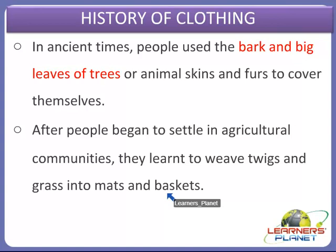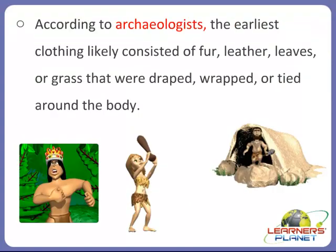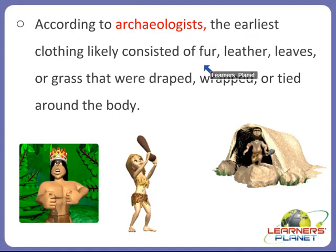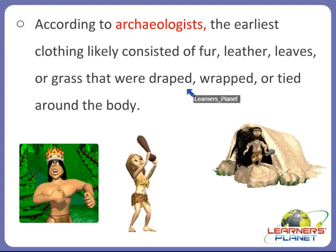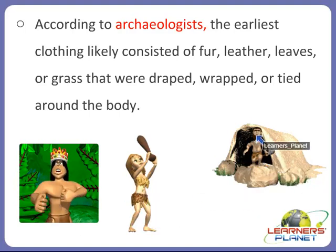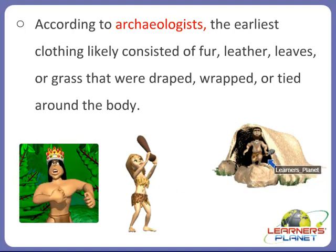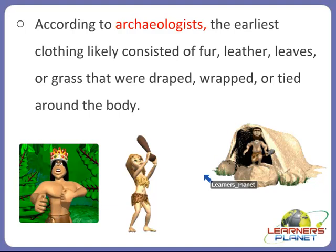These fabrics made out of cotton or flax were used by the people after they began to settle in agricultural communities. You will be amazed to know that, according to archaeologists, the earliest clothing likely consisted of fur, leather, leaves, or grass that were draped, wrapped, or tied around the body. As you can see in the pictures, this is a picture of people in ancient times — they were wearing animal skin because they did not have any type of cloth. So the earliest clothing probably comprised of grass or leaves which were wrapped or tied around the body.